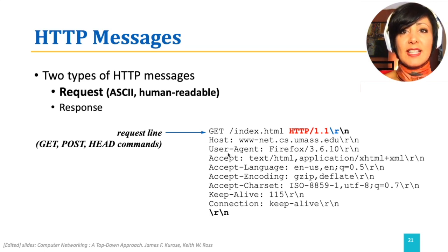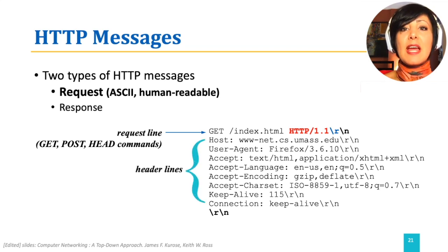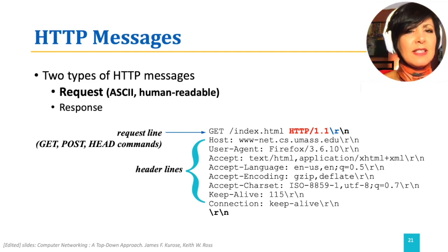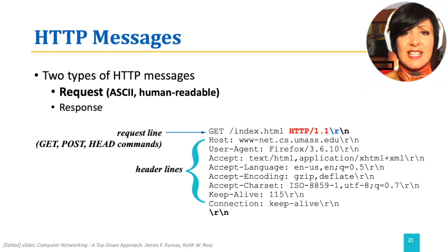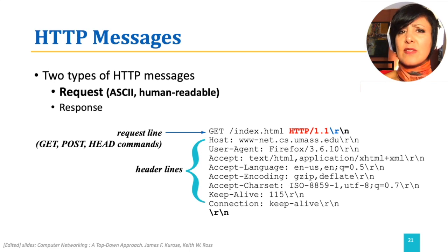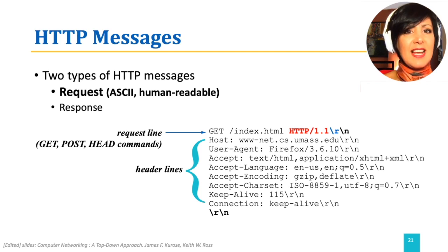The request line is followed by header lines. In the first line of the header lines, you can see the specification of the host address. If the TCP connection to the server already exists at this stage, why do you think this host address is required? I will leave this for you to think about.